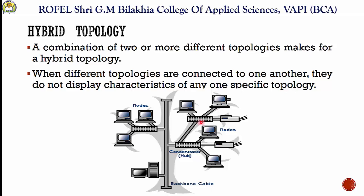The first example of hybrid topology is star-bus topology. In that, one backbone cable is used — that is the concept of bus topology. After that, connected to that backbone cable is a different topology network. Here there is one hub, here is another hub, and another hub — this is the star topology. So different stars are connected with a single backbone cable.